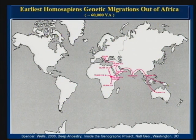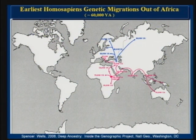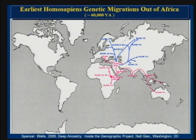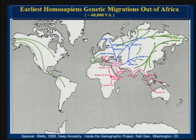As migration started, one of the first major migrations was along the coast all the way down to Australia. Another big group headed up north to Scandinavia. Another group went up to Iraq, Iran, and Moscow. Some went to Asia, some back to Europe. Others followed suit five or ten thousand years later. We then have groups populating Asia, and finally groups populating North and South America.